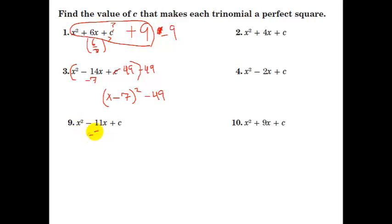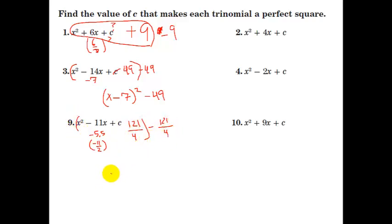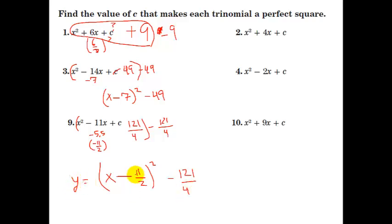For this one, half the middle number is negative 5.5, or negative 11 halves. If we square that, we get 121 over 4 — square 11 you get 121, square 2 you get 4, and the negative sign goes away. If we add it, we also have to subtract it — that's a very key step. Now the part here is going to become (x − 11/2) squared minus 121/4.